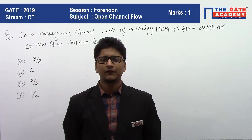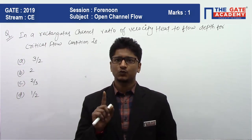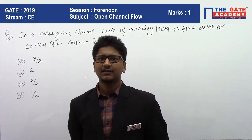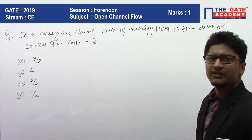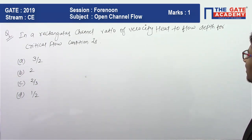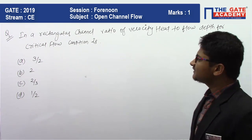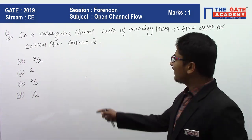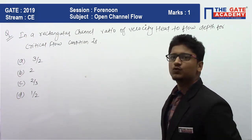In open channel flow, you will generally get one-mark and two-mark questions. I am going to solve the first one-mark question from the forenoon session. The question is: in a rectangular channel, the ratio of velocity head to flow depth for critical flow condition is — options are (a) 3/2, (b) 2, (c) 2/3, and (d) 1/2.